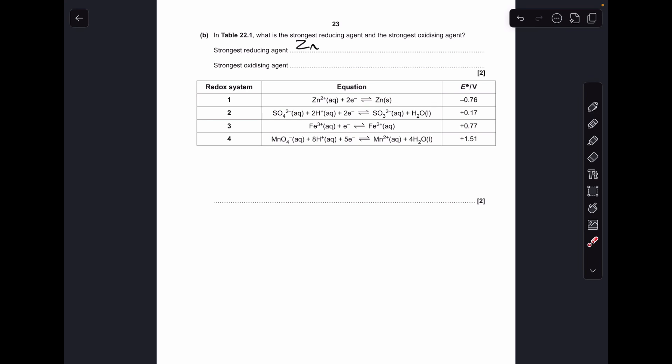Moving on to the strongest oxidizing agent. So an oxidizing agent is an electron acceptor. So these are all on the left-hand side of these half equations. And the strongest one is the one with the most positive standard electrode potential. So in this case, it's going to be the MnO4- along with the H plus ion.